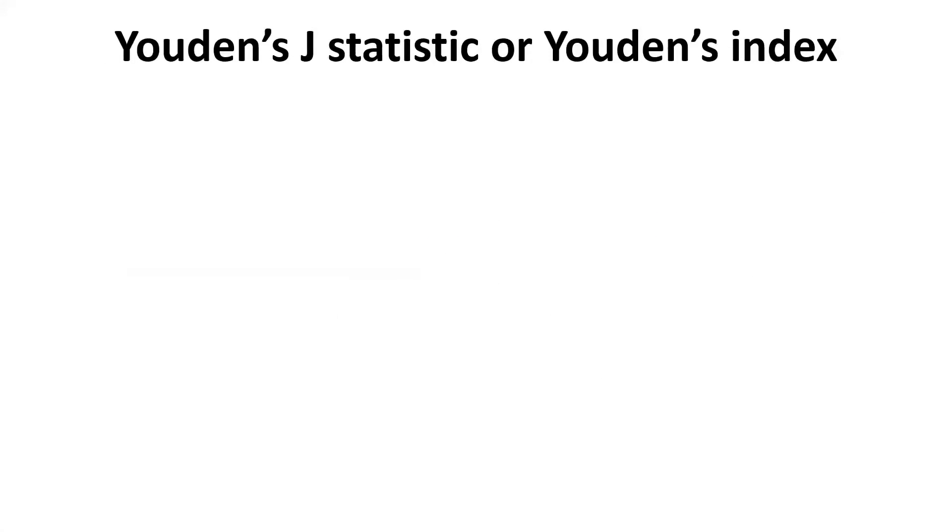The answer to this comes in the form of Youden's J statistic or Youden's index. This was proposed back in the 1950s, but it's quite handy even today when you're solving machine learning problems and you're struggling to get the optimal results.